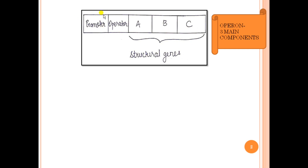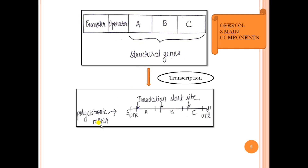This means that if RNA polymerase comes and binds to this promoter and initiates transcription, it will result in the transcription of all the structural genes present downstream of this promoter, giving you an mRNA. In this single mRNA molecule, there is a protein coding region for structural gene A, B, as well as C. Such an mRNA which has more than one protein coding region is called a polycistronic mRNA.